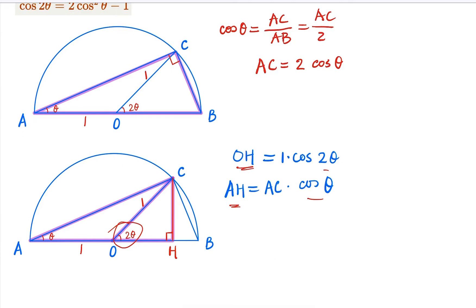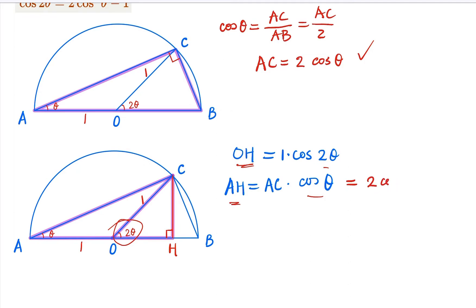Now, using the conclusion from earlier, we know that AH equals 2 cosine squared θ.